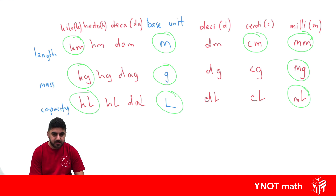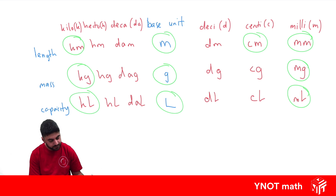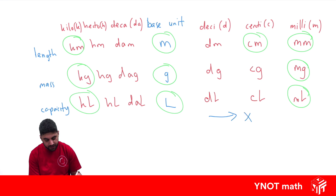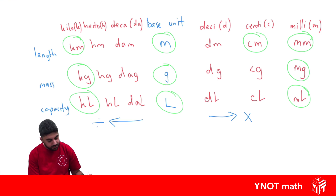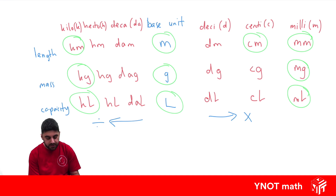It's important to know the other ones exist because it's going to help us make sense when converting. The ones we commonly use are millimetre, centimetre, metre, and kilometre; milligram, gram, and kilogram; and millilitre, litre, and kilolitre. If we want to go this way on our table we want to be multiplying, and if we go this way we want to be dividing, because every unit from one to the next increases or decreases by a factor of 10.